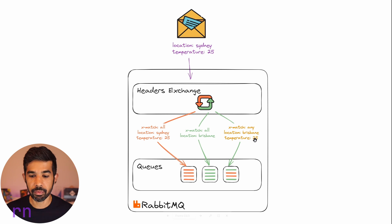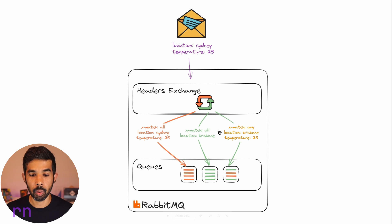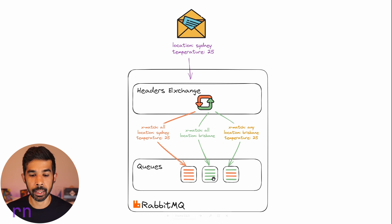In this case, the message gets delivered to multiple queues because the temperature matches the 'any' attribute in one binding, and both location and temperature match exactly in another. However, where the location is Brisbane and the message doesn't have Brisbane, that message does not get filtered for that particular binding. Let's see how we can use the headers exchange from a .NET application.